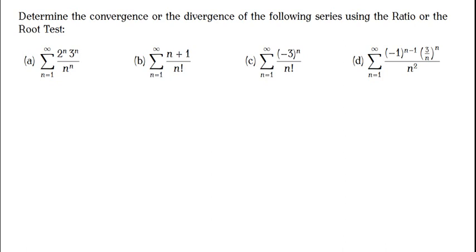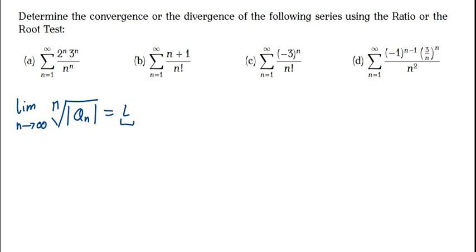For the first one, the way we apply the root test is: we say the limit as n approaches infinity of the nth root of the absolute value of a sub n, which equals L. The value of L is used to make a conclusion: is it greater than 1, less than 1, or equal to 1? Each case tells us whether the series converges, diverges, or whether no conclusion can be made.